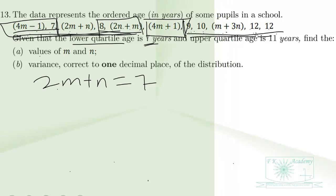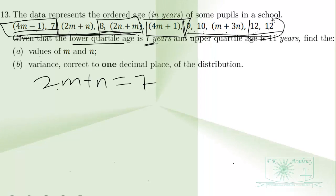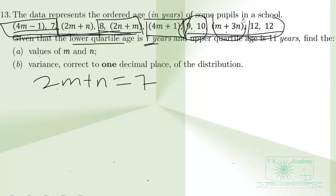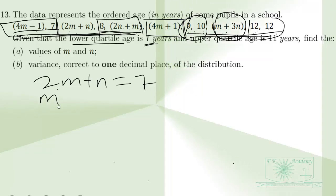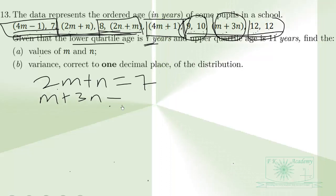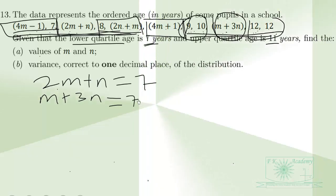For the upper quartile, we have one, two, three, four, five values in the upper half. The median of the upper half is M + 3N, and according to the question, M + 3N is equal to 11.